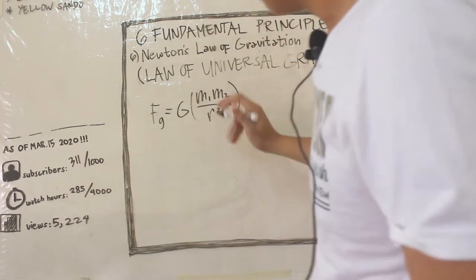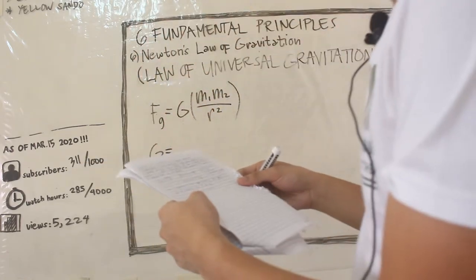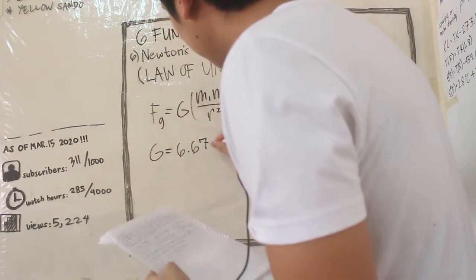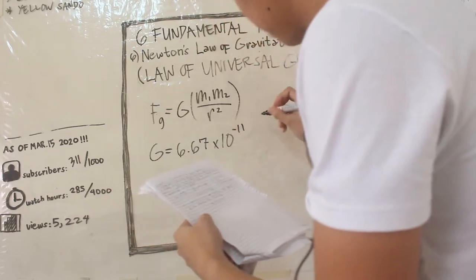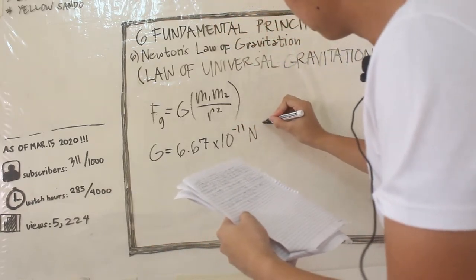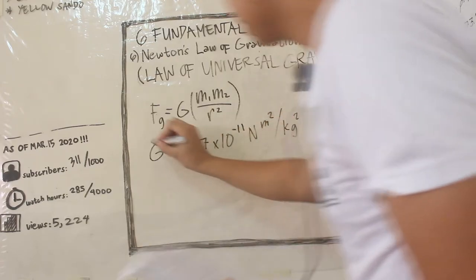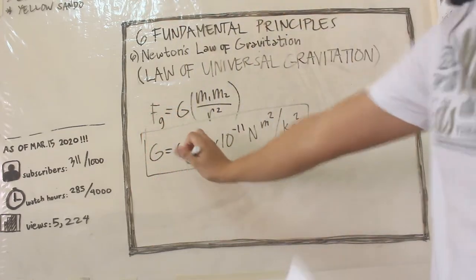G is the gravitational constant, and G is equal to 6.67 times 10 raised to negative 11 newton meter squared per kilogram squared. This number is constant - just plug it in to get the force.